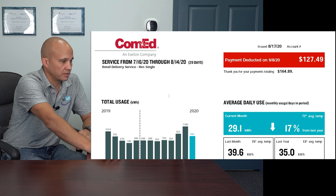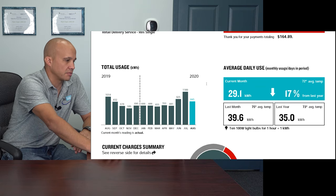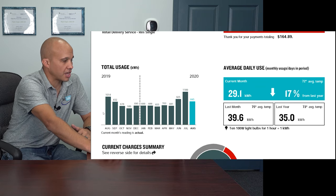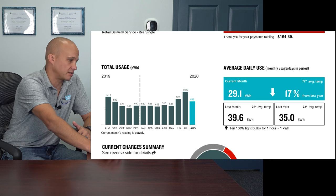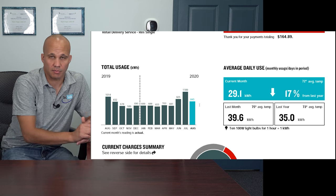This is my most recent ComEd bill here in Illinois. Normal stuff on here — your account number, name, how much money you owe and when it's due. Most utilities will give you a graph showing how much energy you're using each month. This is my final month here in August. I like to look back and see the prior August — I used 1,014 KWH, this time 845 KWH.